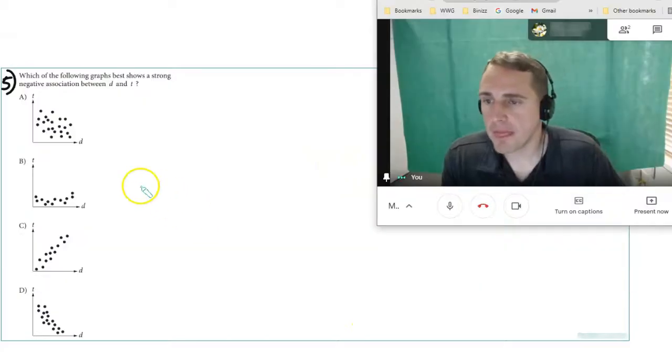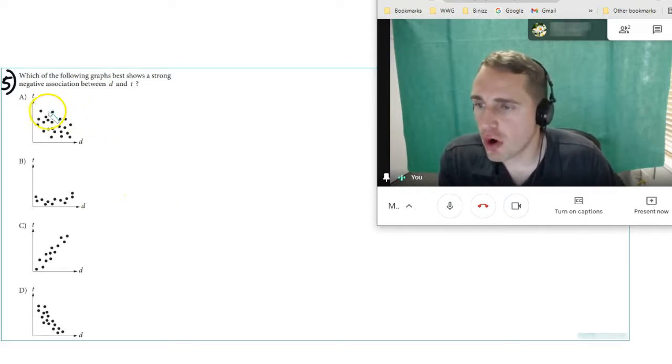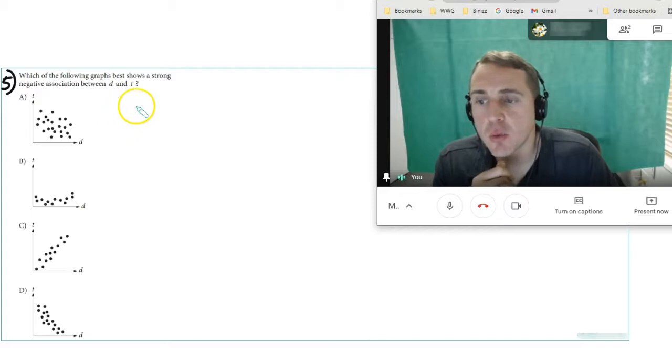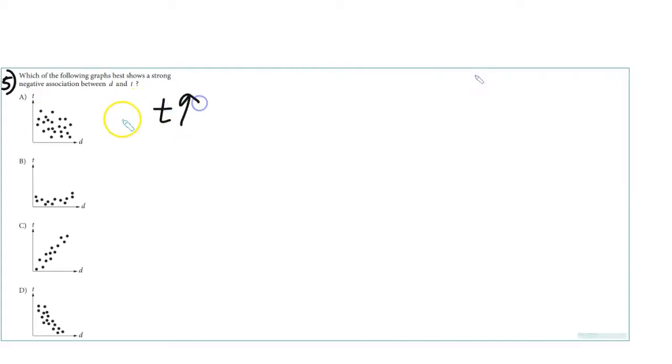Number 22: Which of the following best shows a strong negative association between D and T? In other words, T is going up but then D is going down. Which one would that be? This one. Because the trend line would be this way. If D is going down, T is going up, or for that matter, if D is going up, T is going down.